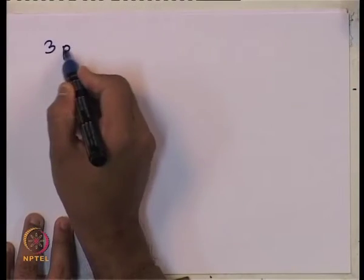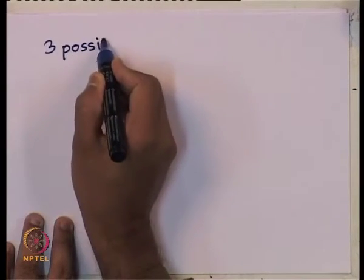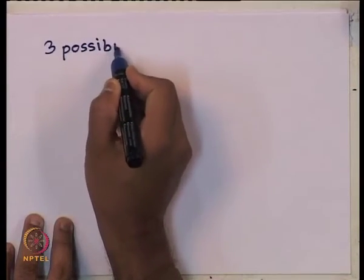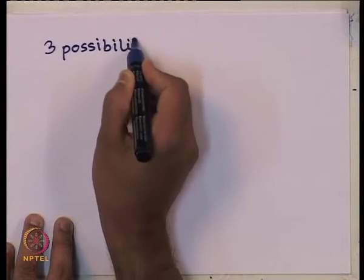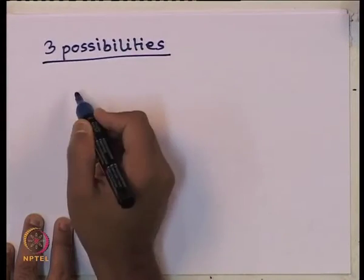And what about the acceleration? The acceleration is x lambda squared cosine of (pi plus lambda t minus theta). So acceleration is at a phase of 180 degrees with respect to displacement. This is known to us from high school physics. Now, three possibilities can arise.